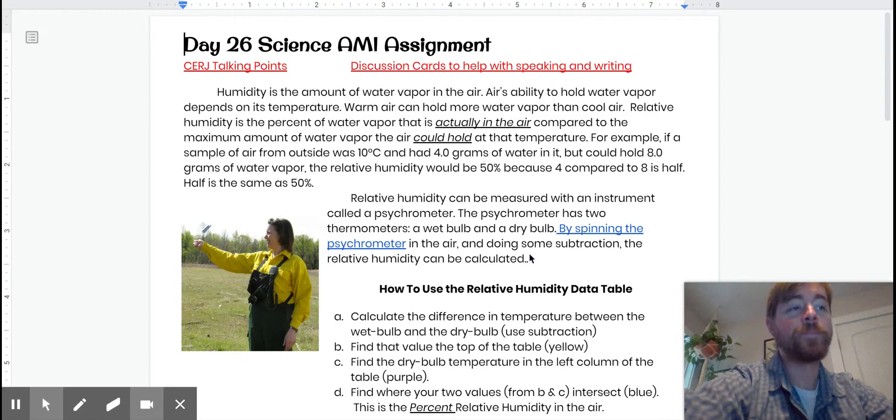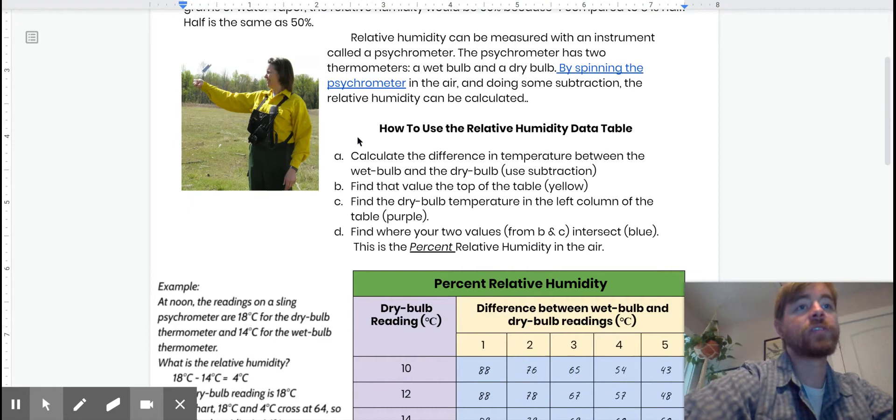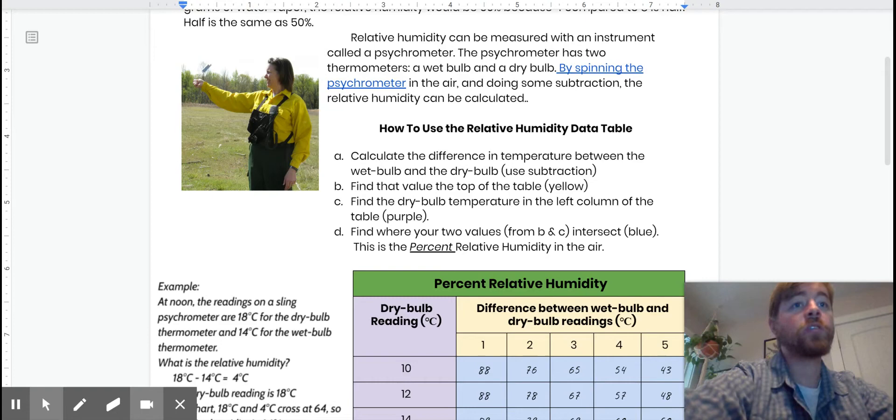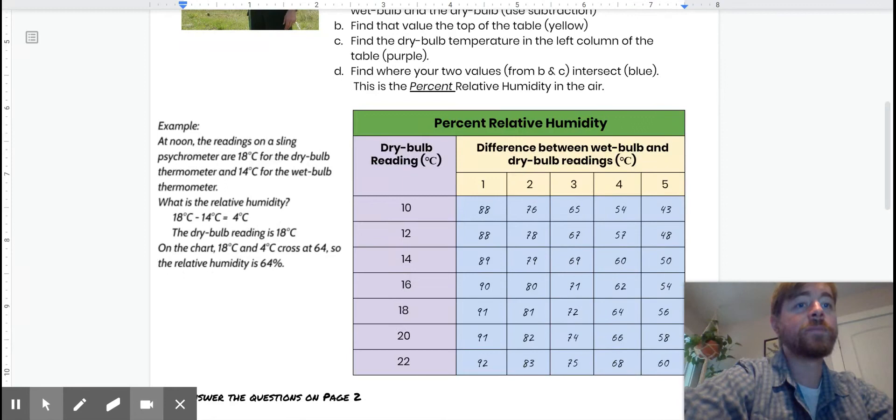In a little more detail, let's read about how to use a sling psychrometer to get relative humidity. First we calculate the difference in temperatures between the wet bulb, that's the one with the little sock on it, and the dry bulb, the actual air temperature. So first we subtract one from the other. Our second step is we find our value at the top of this table. So we look here, was our difference in temperature one, two, three, four, or five. Then we find the dry bulb temperature in the left column in Celsius. And then we find where those two values intersect. This is our percent relative humidity, how much of the water that could be in the air is actually in the air.